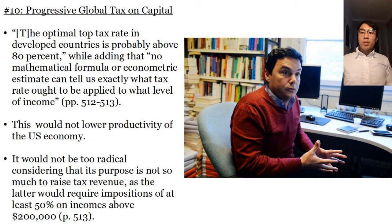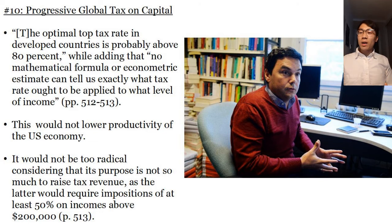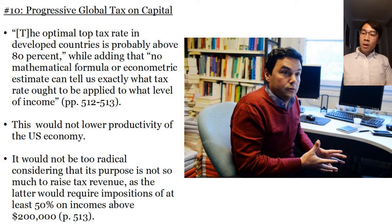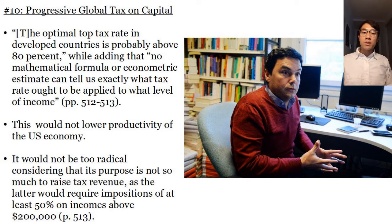Piketty is bold enough to make conjectures about what such a global tax on capital might look like. He says the optimal tax rate in developed countries is probably above 80% or so. And yet he hedges by saying no mathematical formula or econometric estimate can tell us exactly what tax rate ought to be applied to what level of income, given this rather utopian idea for a progressive global tax on capital. He nonetheless claims this would not lower productivity of the US economy to impose such a tax, and that it would not be too radical — its purpose is not so much to raise tax revenue but more to mitigate wealth inequality.